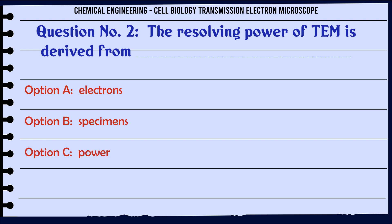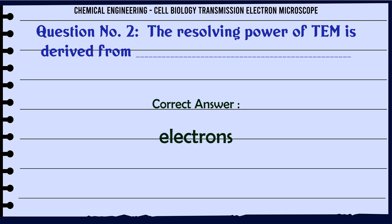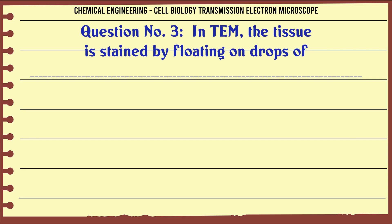Question 2: The resolving power of TEM is derived from: A. Electrons, B. Specimens, C. Power, D. Ocular system. The correct answer is electrons.